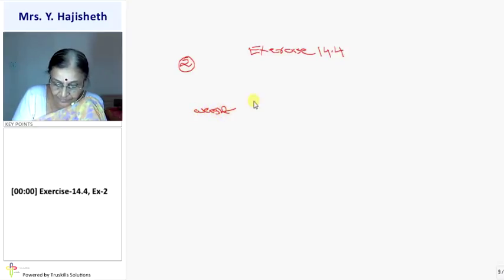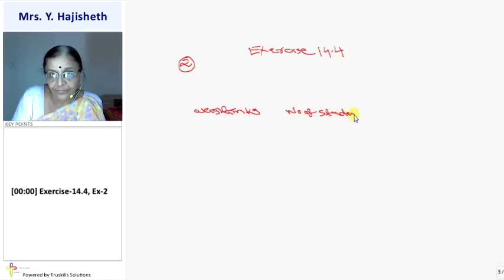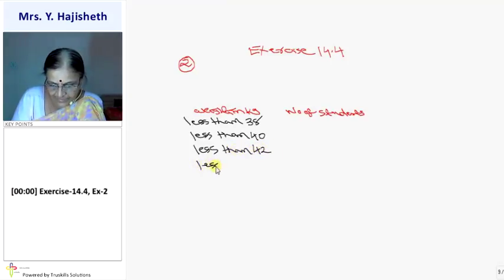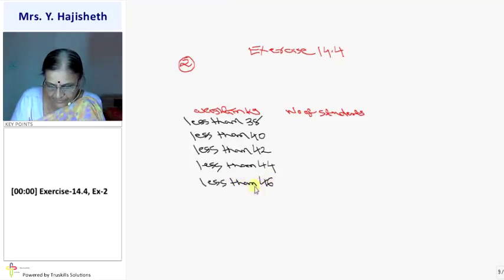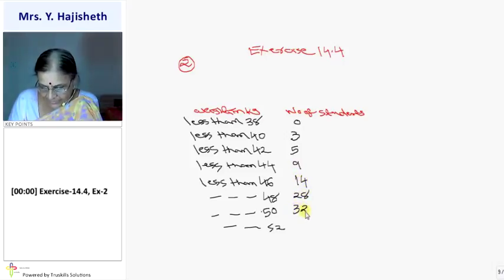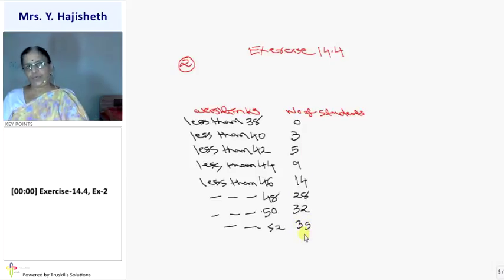Weight in kg and here, number of students. But the table given is of less than type. You are given: less than 38, less than 40, less than 42, less than 44, less than 46, less than 48, less than 50, and less than 52. The number of students are given as 0, 3, 5, 9, 14, 28, 32, and 35 — total 35 students. So this number of students gives you the cumulative frequency.